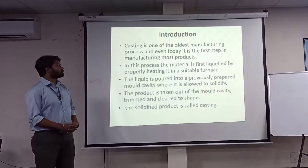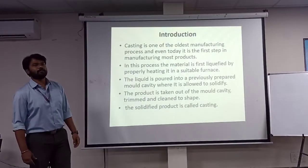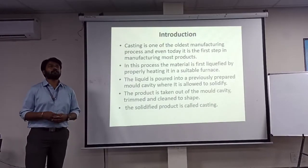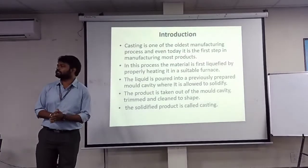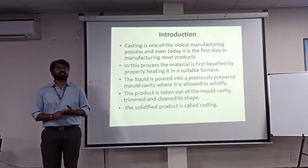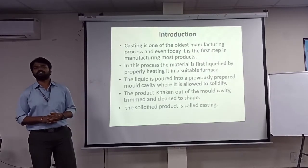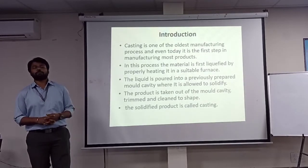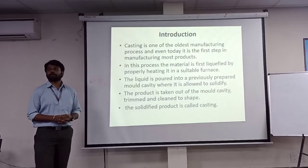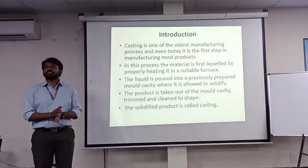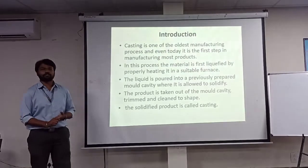Casting is one of the oldest manufacturing processes. In manufacturing, there are four different classifications: one is casting, second one is forming, third one is welding, and the fourth one is machining. Casting and metal forming come under primary manufacturing processes, whereas machining and welding come under the secondary manufacturing process.